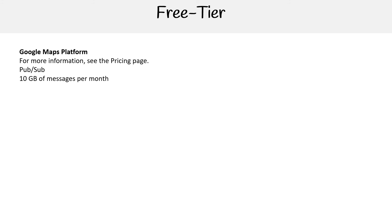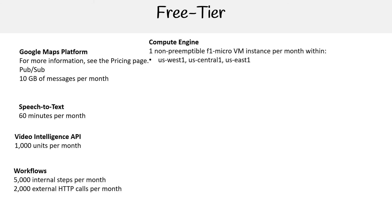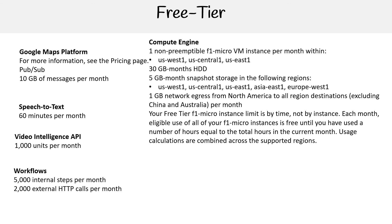For Google Maps, you get 10 gigabytes of messages per month. For Speech-to-Text, you get 60 minutes. For Video Intelligence API, 1,000 units per month. For Workflows, 5,000 internal steps per month and 2,000 external HTTP calls per month. For Compute Engine, you get one non-preemptible F1-micro VM instance per month within US-West, US-Central1, and US-East1, with 30 gigabytes of HDD and five gigabytes of snapshot storage. The free tier F1-micro instance is limited by time, not by instance — each month, eligible F1-micro usage is free until you've used the equivalent number of hours. Just remember: F1-micro for free instance usage, and calculations are combined across supported regions.